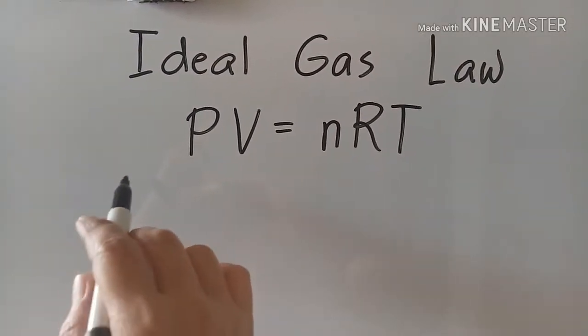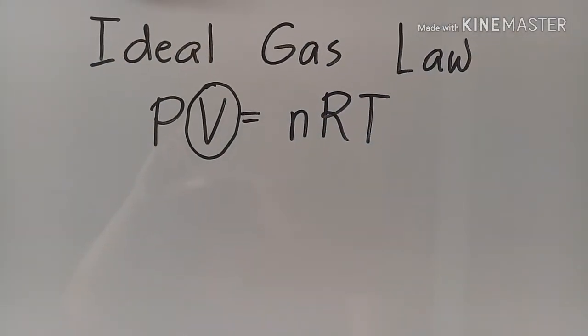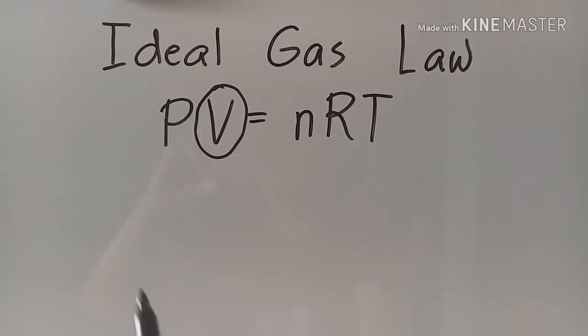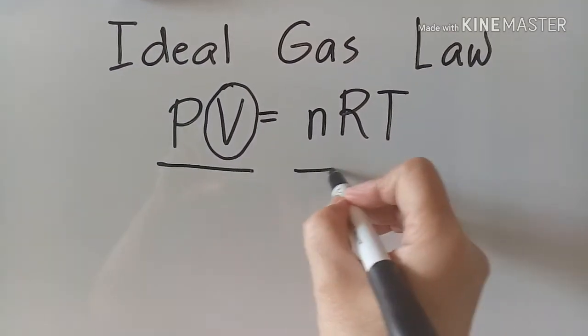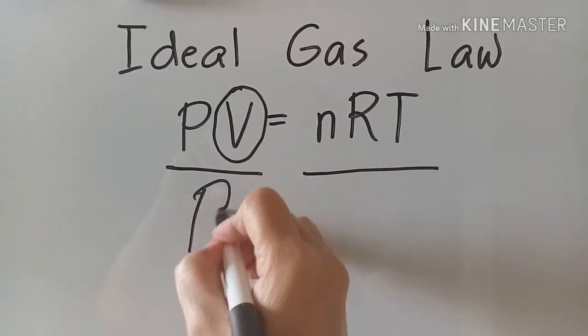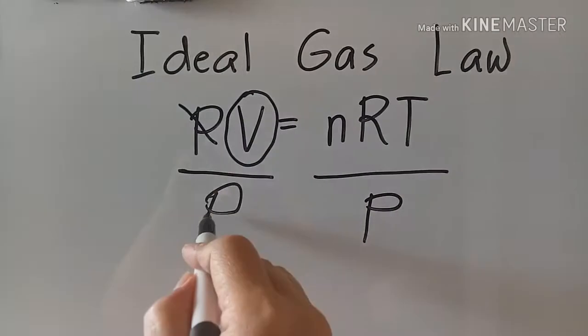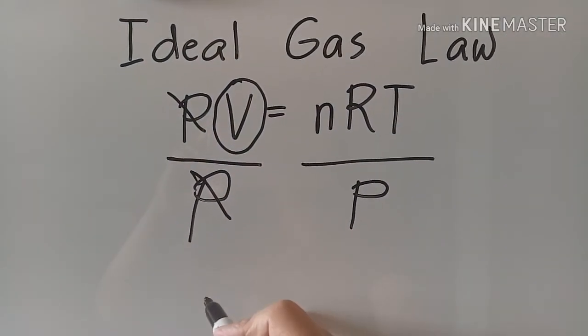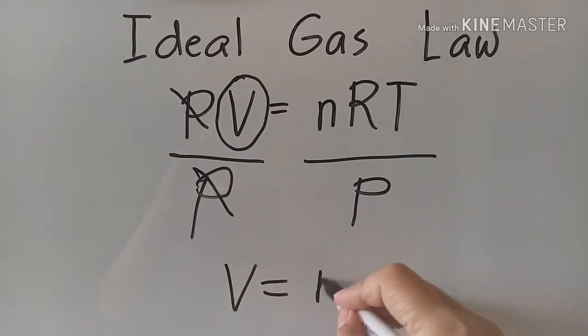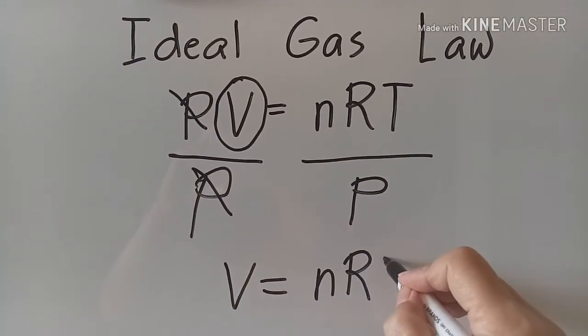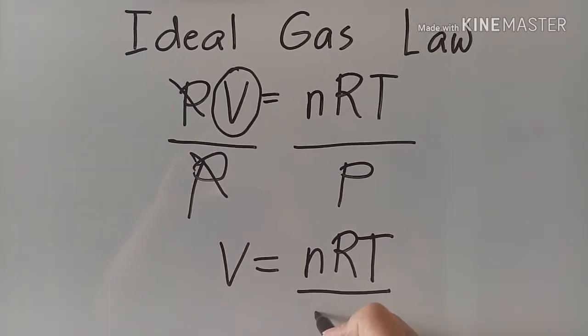Since the unknown is V, we're going to circle V, and then whichever is the partner variable of the unknown, and that is P, we're going to divide both sides of the equation by that variable, which is P. We'll write P here, cancel out this. So, our formula for volume will be V equals nRT all over P.